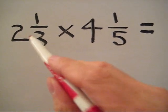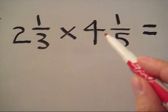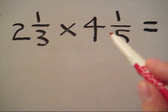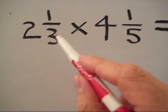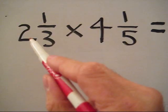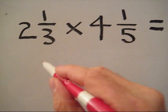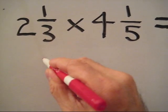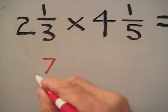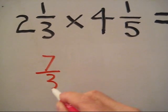The first thing we're going to do is change the two mixed numbers into improper fractions. Let's go ahead and do that. We start with the 3, multiply 2 to get 6, add 1 to get 7, and keep our denominator of 3 to get 7 thirds.